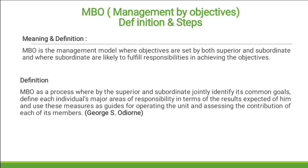First, we will see the meaning of MBO. MBO says that the superior and subordinate together, jointly, come out with the common goal of the organization. Subordinates are made involved in coming out with the common objective, so they are likely to fulfill their responsibility with great energy.